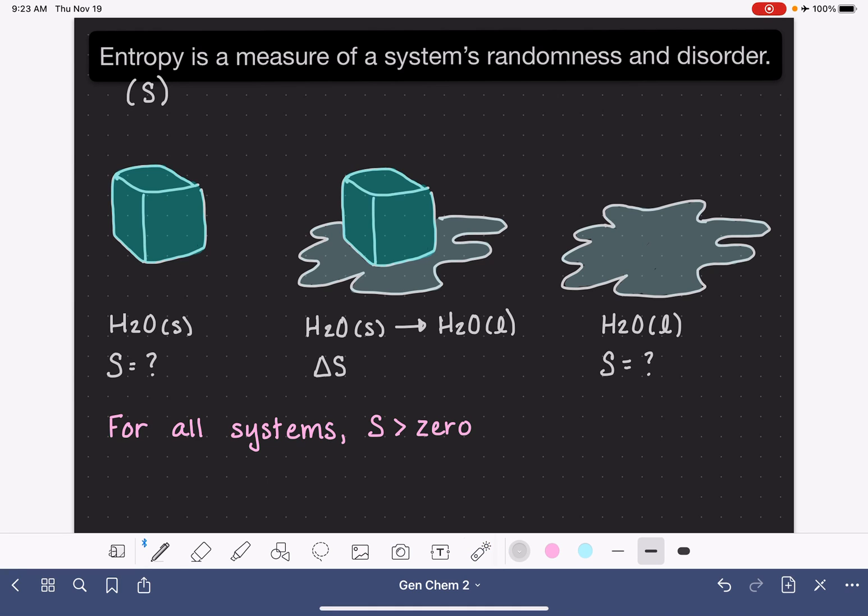We can calculate the change in entropy for any sort of process or reaction by taking the entropy of the products, the final entropy, and subtracting the entropy of the reactants, the initial. So this could also be written as delta S is equal to the entropy final minus the entropy initial.